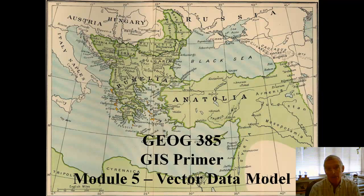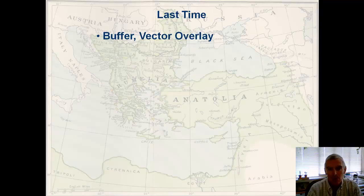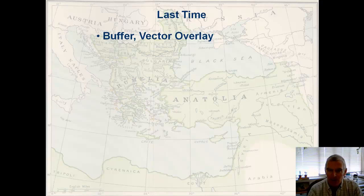Welcome back. Those of you that are paying attention are noticing that I've changed the background map and moved the title from the top to the bottom. Last time I talked about buffer and vector overlay, which are geoprocessing operations you can perform on your data to extract pieces of your data and even new geometry to answer questions about how or why your data behave the way they do.